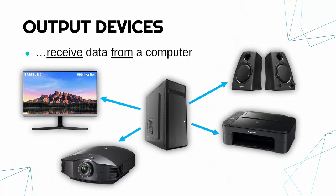Moving to output devices — output devices receive data from a computer, so the data is primarily coming from the computer and going to the hardware device. For example, a monitor, a screen, is showing a depiction of what is going on in the computer — you can see an interface created by the software. That needs to come from the computer, so it's an output device. Likewise, speakers — the sound is coming usually through a wire from the computer to the speakers which produce the sound. Projector and printer are good examples too. That printer looks like it's got a scanner as well, so just the printing part is the output in that situation.